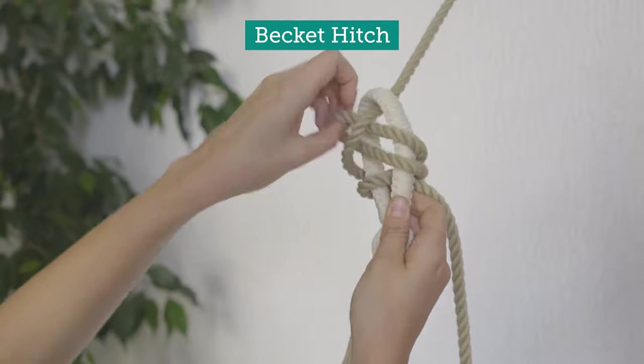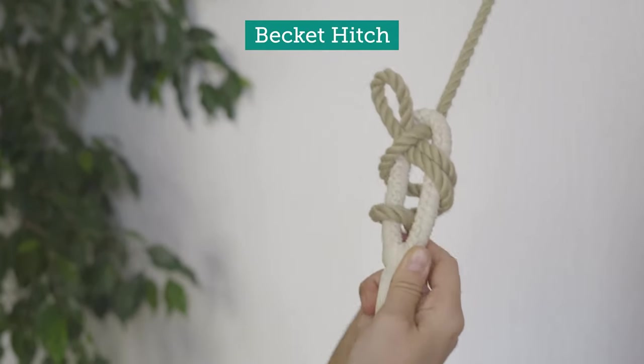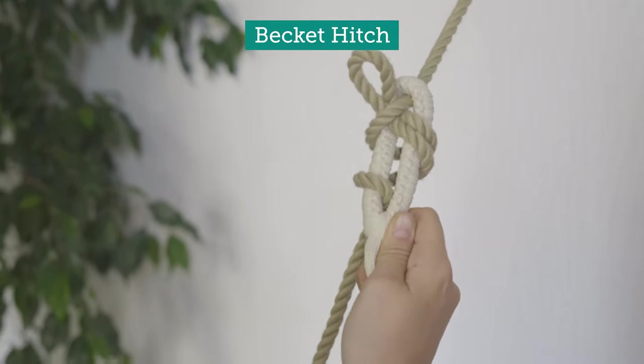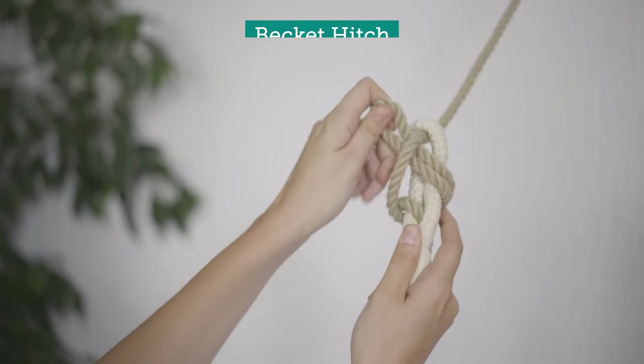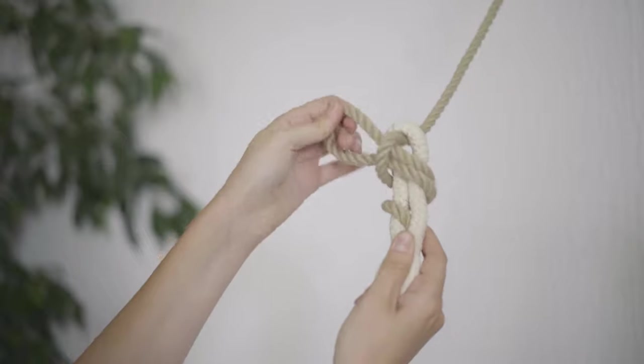Tying your hammock directly is fast and useful if you take your hammocks to different spots, maybe even outdoors. The knot we recommend for this is the becket hitch, which we see here. With this knot, you can also easily vary the height of the hammock. This knot tightens under load.